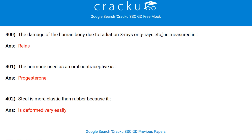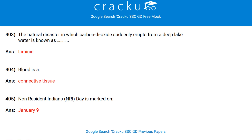Where is the Central Food Technology and Research Institute located? Mysore. The damage of the human body due to radiation from X-rays or gamma rays is measured in rems. The hormone used as an oral contraceptive is progesterone. Steel is more elastic than rubber because it is deformed very easily. The natural disaster in which carbon dioxide suddenly erupts from a deep lake water is known as a limnic eruption.